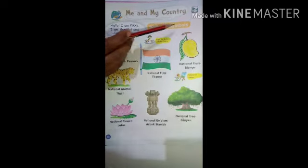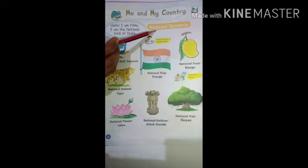National symbols. National symbols means something related to our country. National symbols matlab kya hai? Apna desh se sambandit mahatwapuna chizong ko national symbols bolte hai.